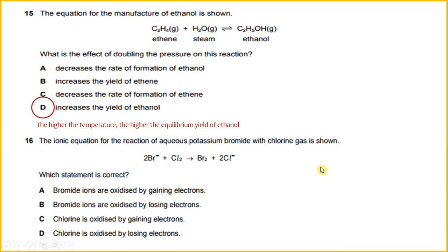The ionic equation for the reaction of aqueous potassium bromide with chlorine gas is shown. Which statement is correct? Aqueous potassium bromide reacts with chlorine gas to form liquid bromine and aqueous potassium chloride. In this case, bromide ions are oxidized by losing electrons.